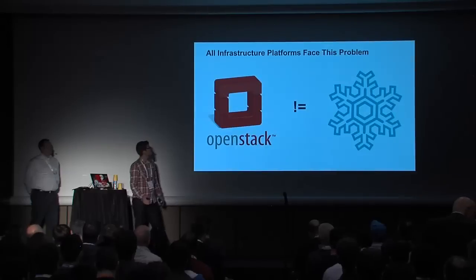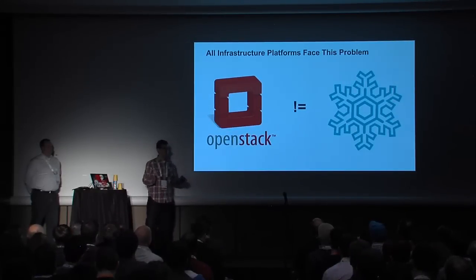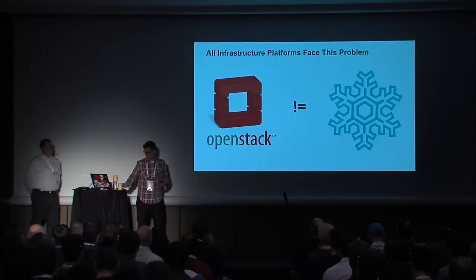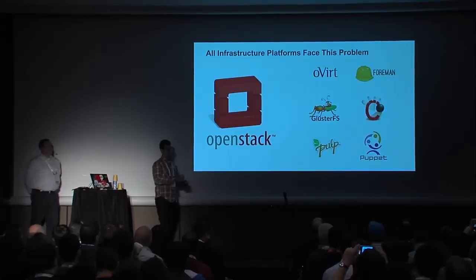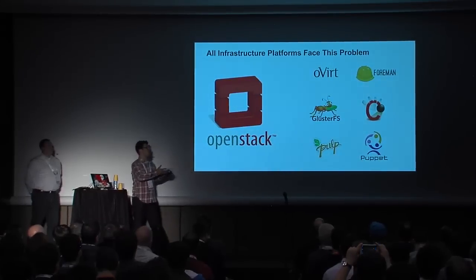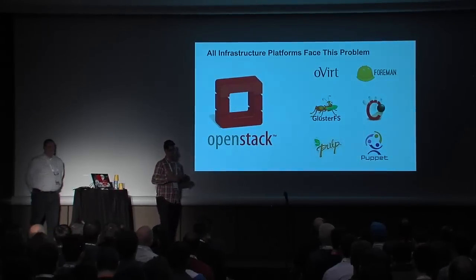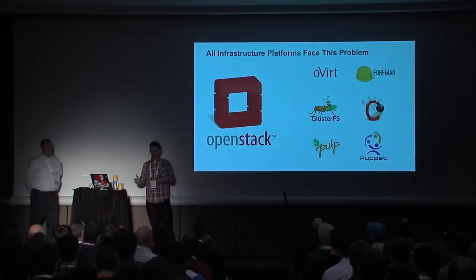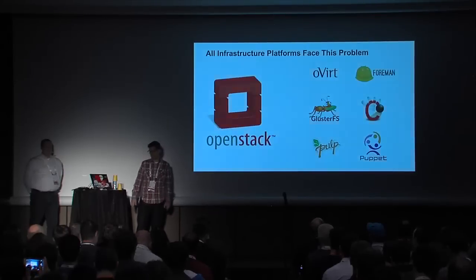This is not to knock OpenStack — OpenStack is not a beautiful and unique snowflake. Every infrastructure platform has the same problem. At Red Hat, we've seen this across open source virtualization platforms, configuration management systems, content delivery, and storage. Any infrastructure services you're running that have dependencies on other infrastructure services end up becoming kind of a nightmare to manage and understand how you update the lifecycle.